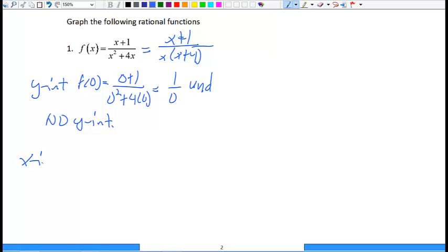Then the x-intercept, x-intercept I get by looking at the numerator. So I set the numerator equal to 0, which gives me x equals negative 1. So I know the only place that this thing crosses the x-axis is at negative 1.